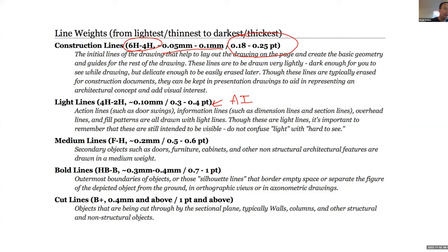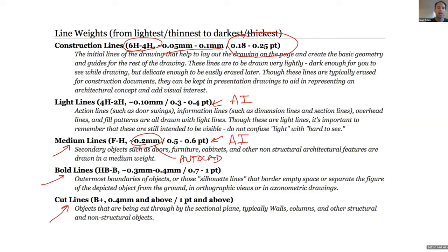Median lines for secondary objects like furniture and non-structural features are about 0.2 mm in AutoCAD, or 0.5 to 0.6 points in Illustrator. Bold lines are the outermost boundaries of objects — larger, thicker, more important pieces — at 0.3 to 0.4 mm or 0.7 to 1 point. Cut lines are the really thick lines, like walls you've cut through: 0.4 mm or more. This chart compares hand drawing, AutoCAD, and Illustrator all together.